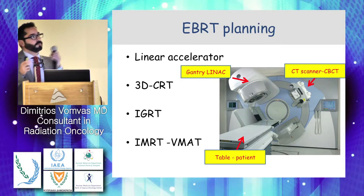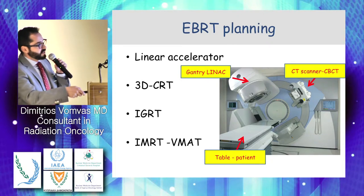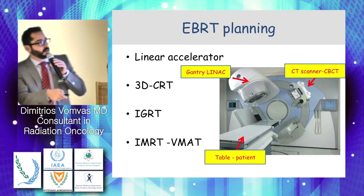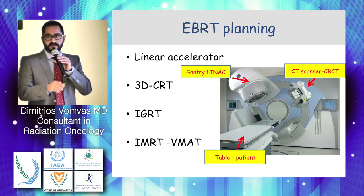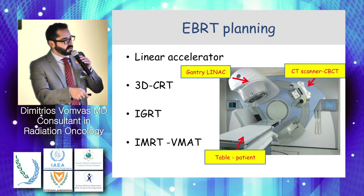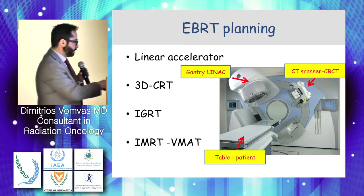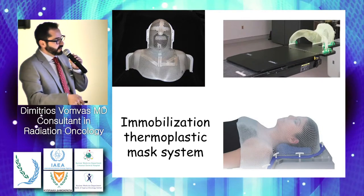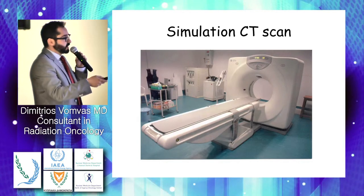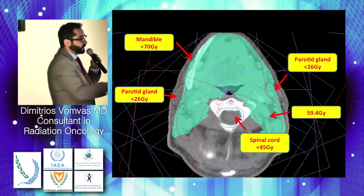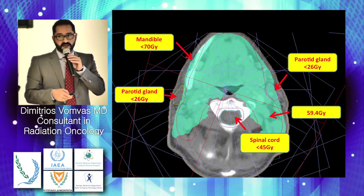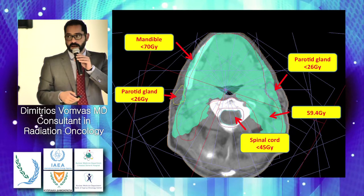This is a linear accelerator — the equipment we use to deliver treatment. This is the gantry of the machine and this is the table for the patient. This is a low-energy CT scanner, so we can perform cone-beam CT, meaning we can scan the area before treatment and offer image-guided radiation therapy. We use a thermoplastic mask system for immobilization. After fitting the mask, we go to the CT scanner and scan the area of the neck. Here we see the case of a patient with medullary carcinoma after surgery, with residual disease and extra-nodal extension into soft tissue of the neck.